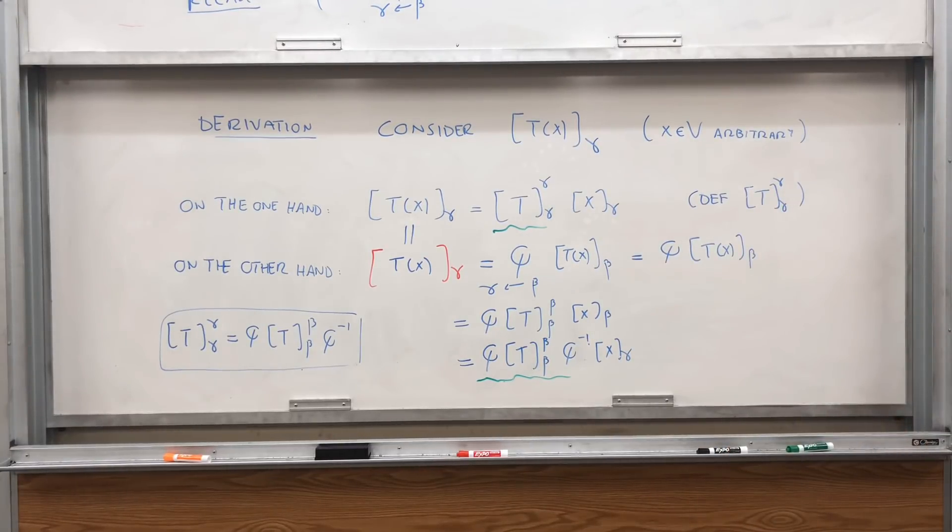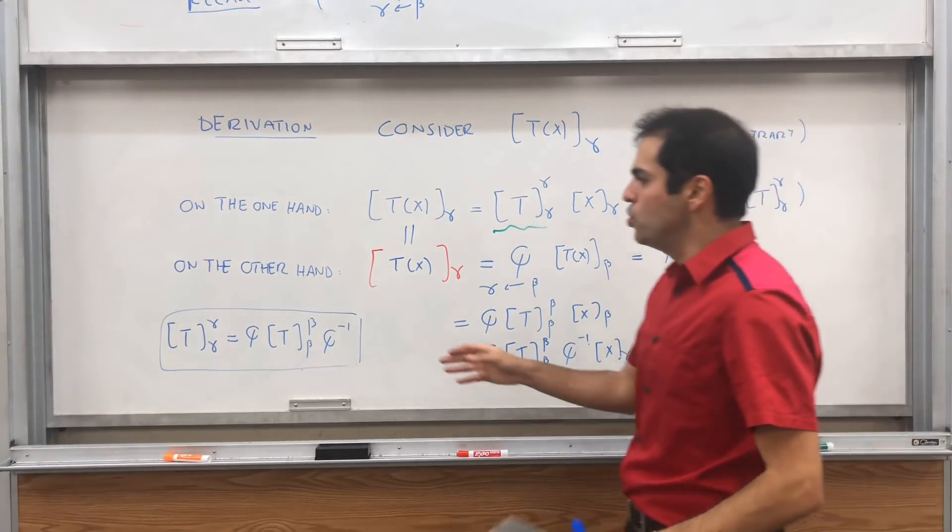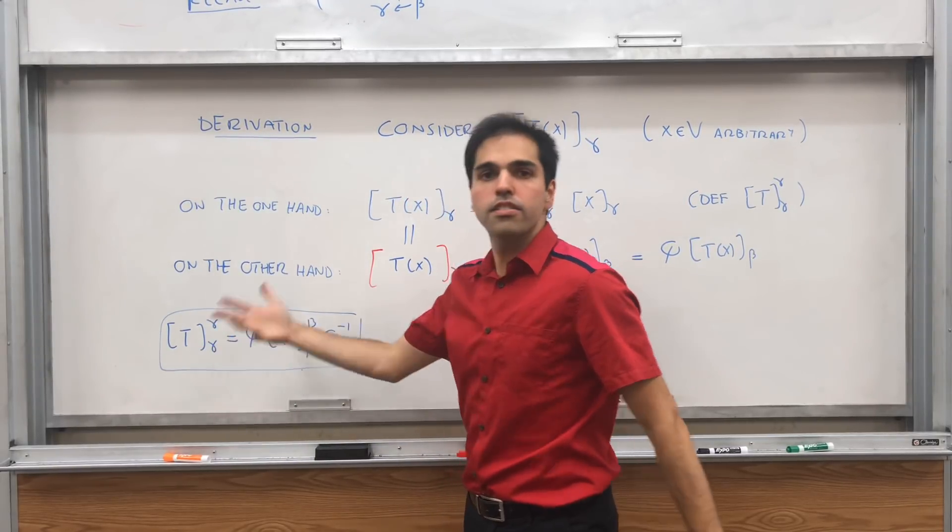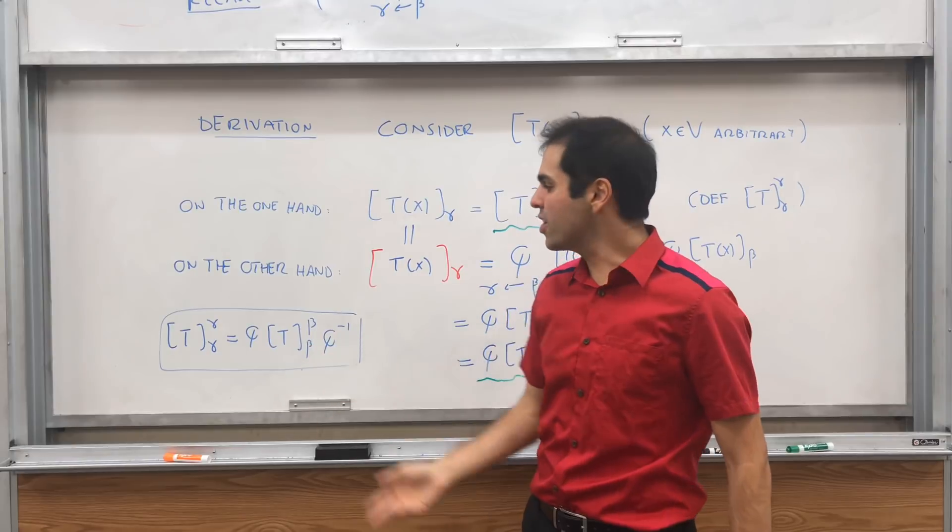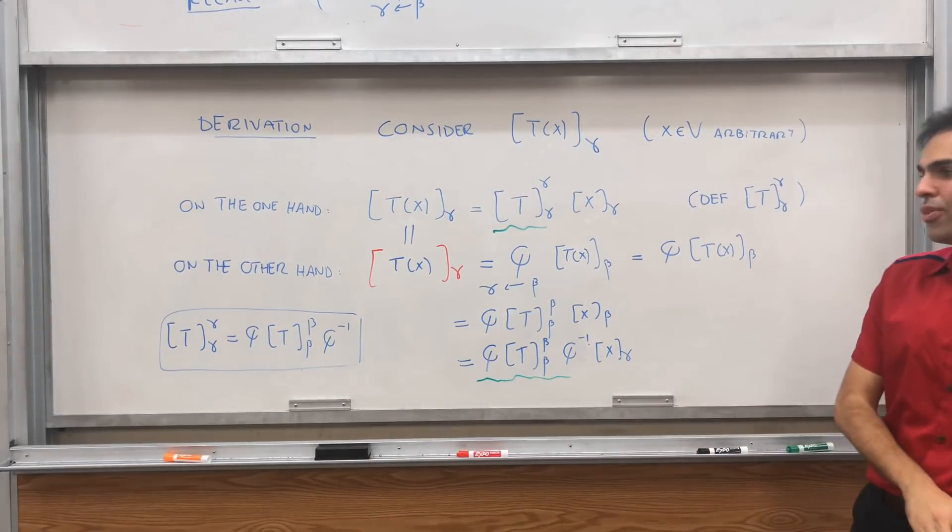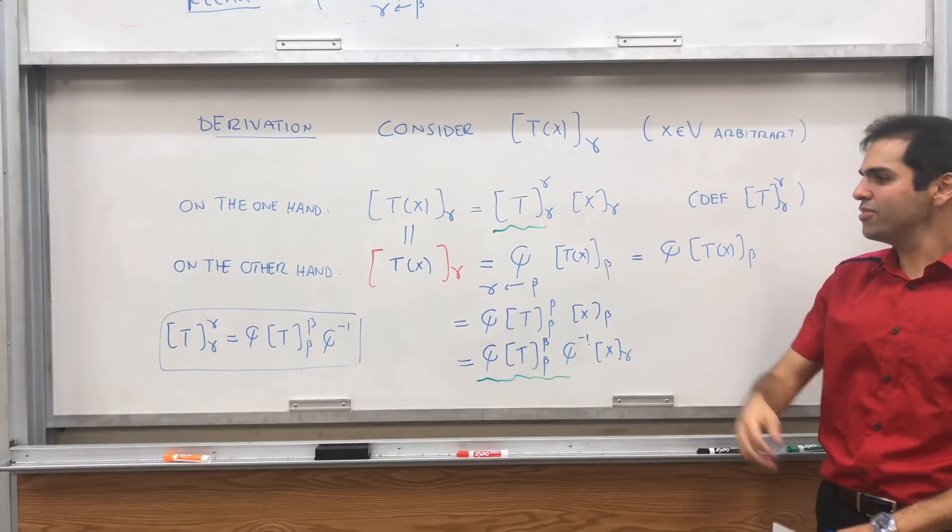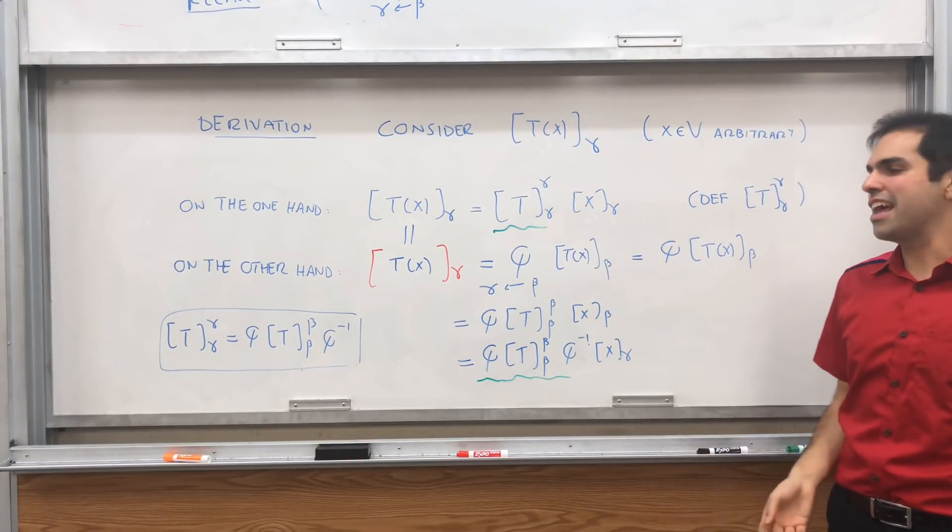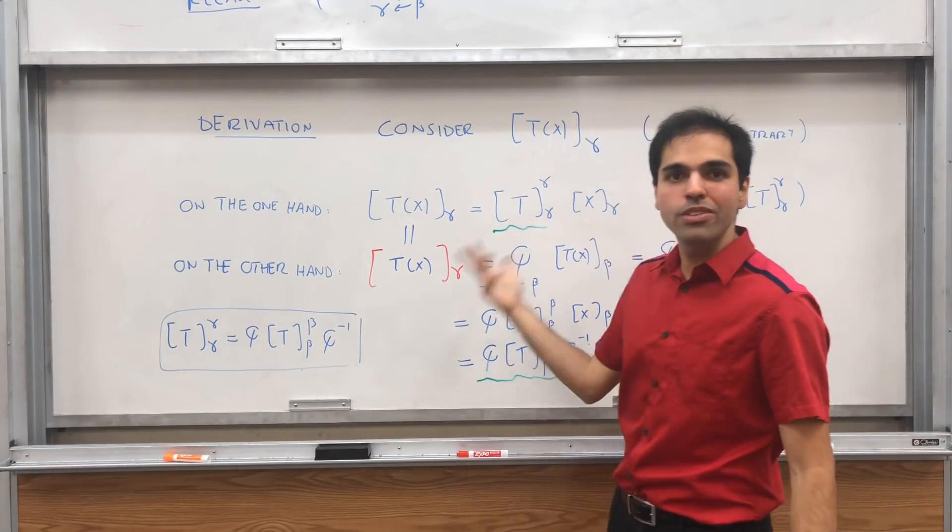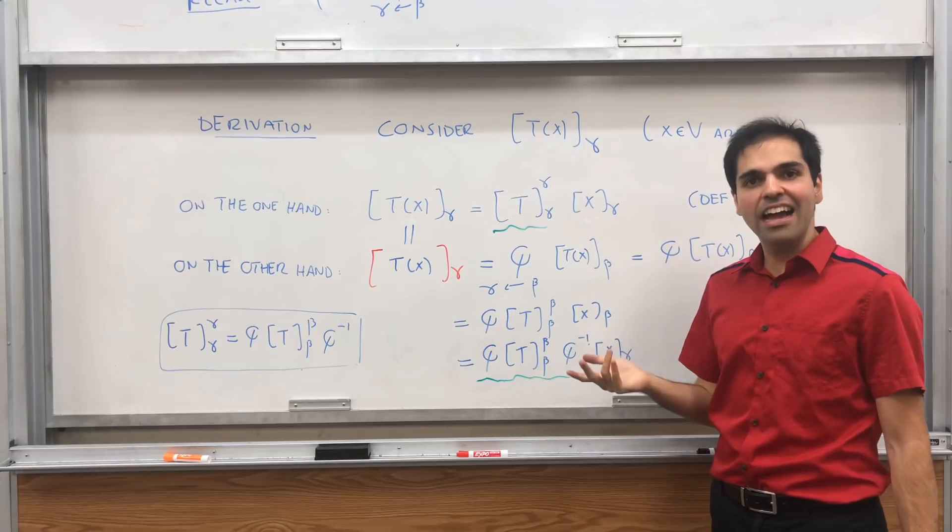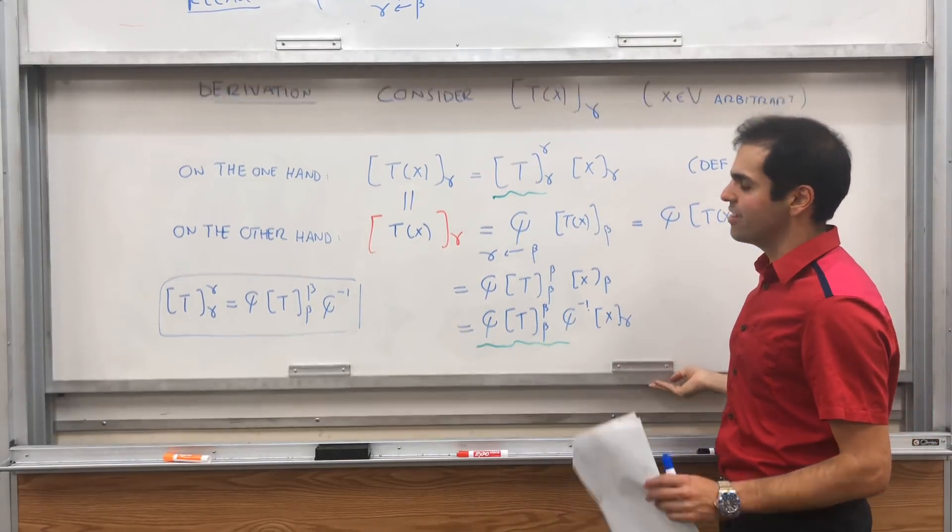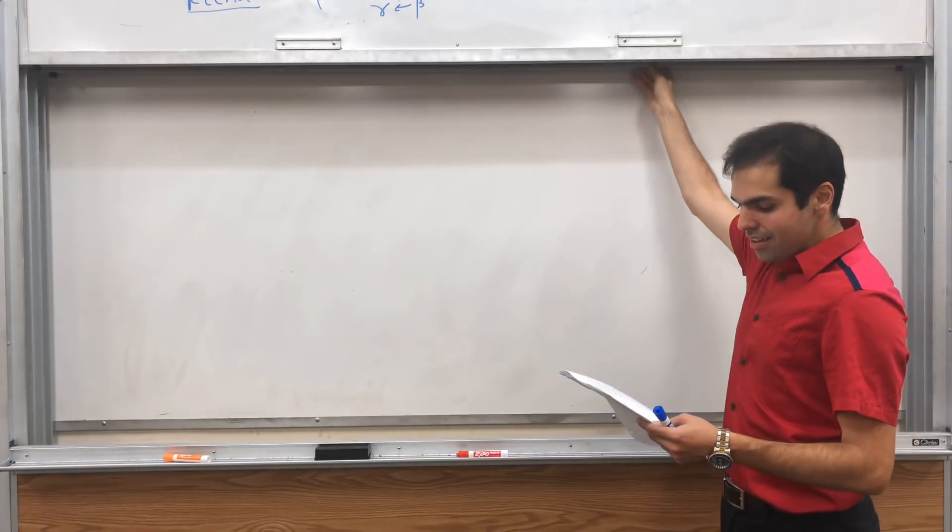In fact, notice we have this new matrix equals Q times old matrix Q inverse. This is what in math we call similar. So those two matrices are similar. In other words, to change bases with matrices, you just use a similarity transformation, and you may or may not have seen this when you did diagonalization. A is diagonalizable if and only if it's similar to a diagonal matrix.